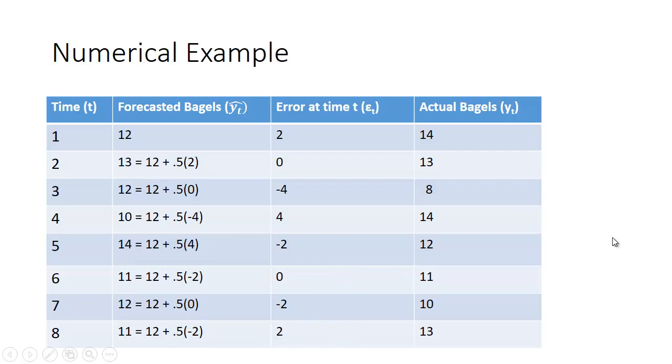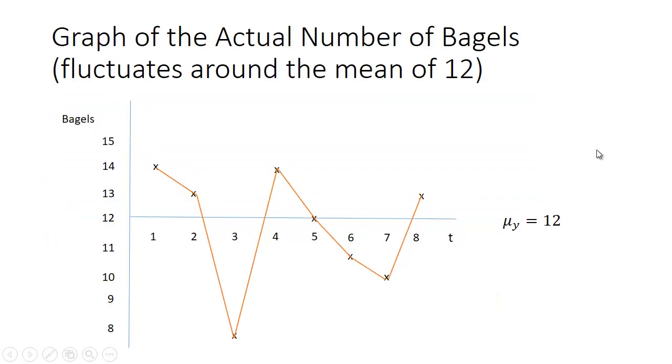So let's take a look at how this looks. What we notice is that these values, these are the actual number of bagels, 14, 13, 8, 14 again. You got it perfect, 12, etc. They fluctuate around the mean of 12, or the average of 12. So that's why we call it a moving average.